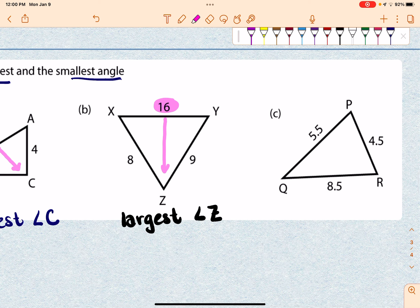If I look at this next one, I have 5.5, 4.5, and 8.5. So that's the largest side. It's across from this angle. So my largest angle is going to be angle P.